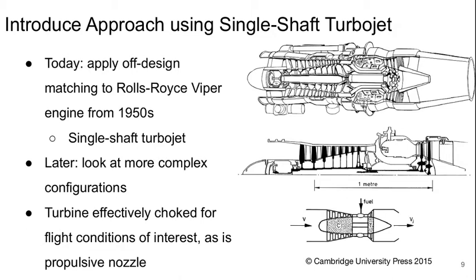It's easiest to introduce this off-design matching approach using an example. So we're going to use the example of a single-shaft turbojet engine to notionally look at this. We'll basically look at matching off-design for the Rolls-Royce Viper engine. This is a turbojet engine from the 1950s, a single-shaft turbojet, basically the simplest engine you can have. Later we'll look at more complex configurations in the subsequent lectures.